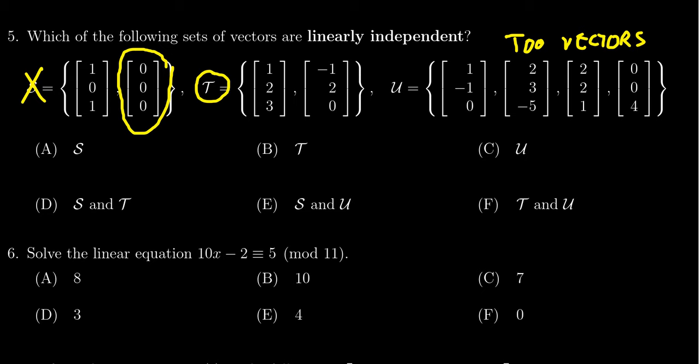And so both set S and U are linearly dependent. Set T is linearly independent. And as we're looking for independent sets, that means the correct response would be choice B.